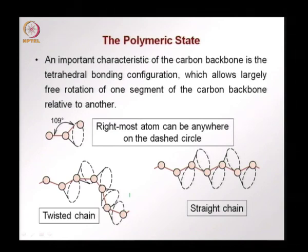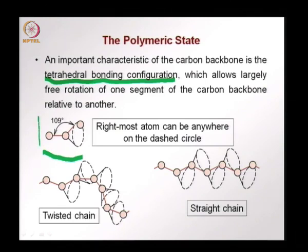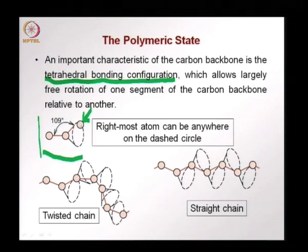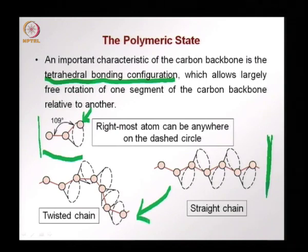One important aspect of the carbon backbone is its tetrahedral bonding configuration, which allows for free rotation of one segment of the carbon backbone relative to another. A given atom can be anywhere on a circle while maintaining the 109-degree bond angle. By rotating on this circle while maintaining that angle, there is a lot of movement or strain obtained without breaking any bond. This leads to chains that can be either relatively straight or twisted, without breaking any bond — giving a lot of flexibility.